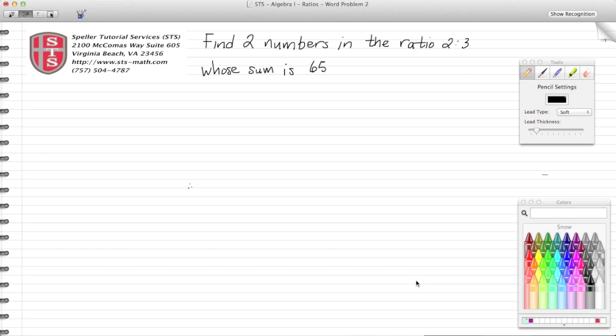Welcome back to Speller Tutorial Services. Today we're going to continue with ratios, looking at a word problem. In this problem, we need to find two numbers in the ratio 2 to 3 whose sum is 65.